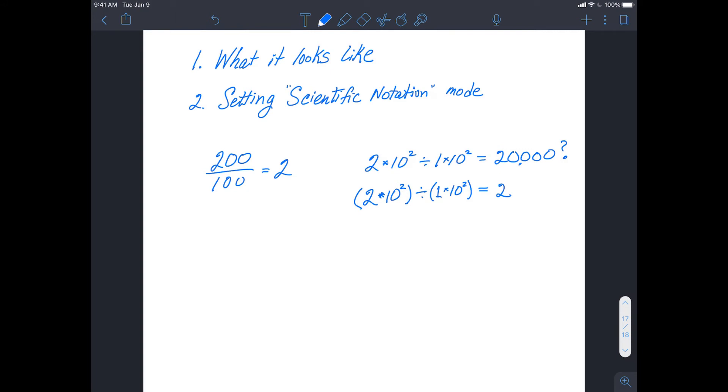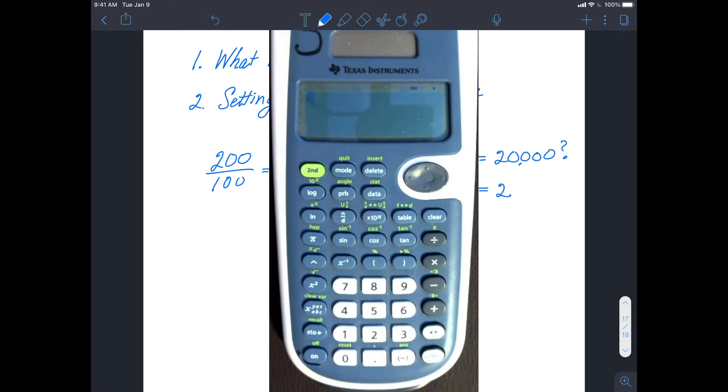One final note. Your calculator will usually display numbers in decimal form, unless the number is either too big or too small for the display, and then the calculator will convert it to scientific notation. If you would like your numbers to always appear in scientific notation, as you might if you're converting standard numbers to scientific notation, you can set up the calculator to do that.